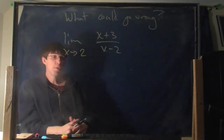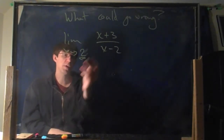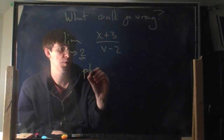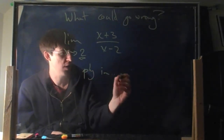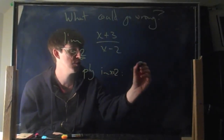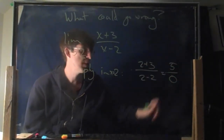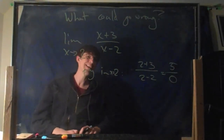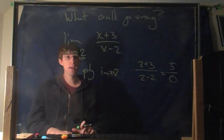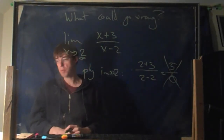In the spirit of just plugging it in, what should we do? Plug in 2 for x. What do you get? You get 2 plus 3 divided by 2 minus 2, which is 5 divided by 0. Anything wrong with that? Yes, there is something wrong — dividing by 0 is not allowed. There's no such thing as dividing by 0. So this is bogus for some reason.